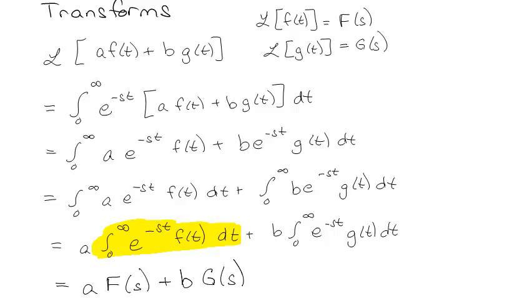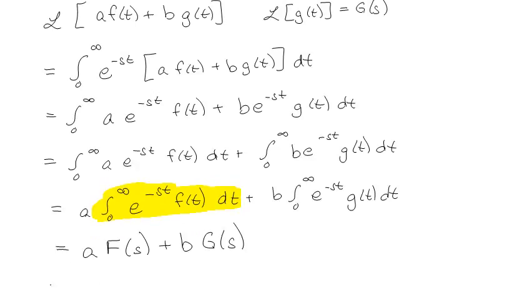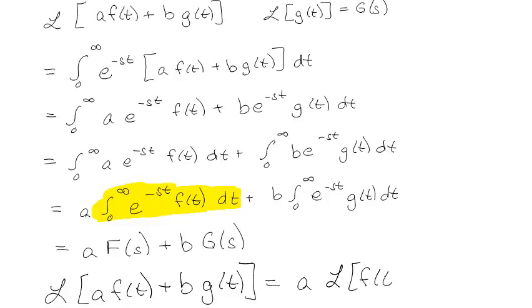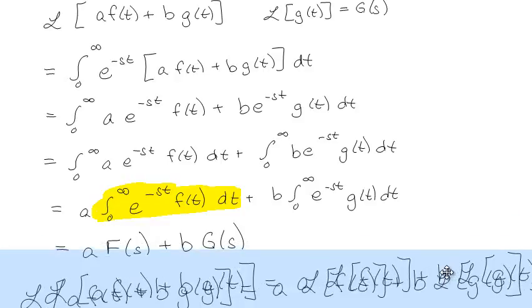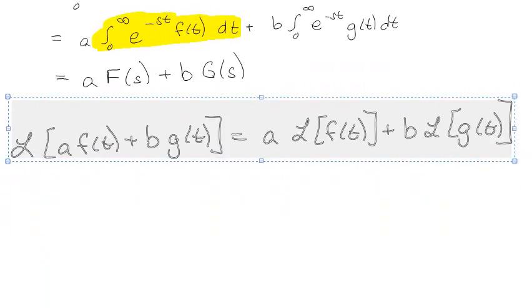So basically what this means is that we've shown that the Laplace transform of a·f(t) + b·g(t) is equal to a times the Laplace transform of the first one plus b times the Laplace transform of the second. Basically, I can pull the constants out. The idea is, essentially, I can pull the constants out and I can separate things at plus signs. So this is actually really kind of neat and really important and allows us to solve Laplace transforms really straightforwardly.